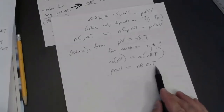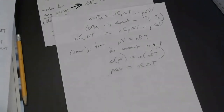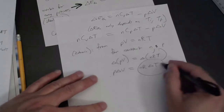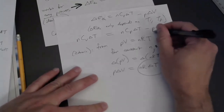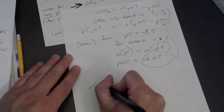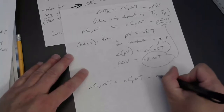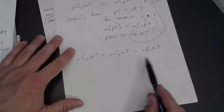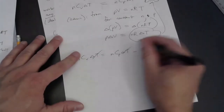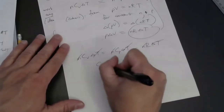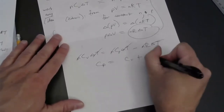P·ΔV = nRΔT is true only for an ideal gas at constant pressure. Substituting this into the first law expression for the isobaric process, and recognizing that ΔE_thermal = nCᵥΔT for both processes, we get: nCₚΔT = nCᵥΔT + nRΔT. The ΔT's cancel and the n's cancel, and we're left with Cₚ = Cᵥ + R.